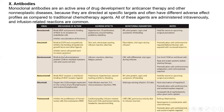Cetuximab also causes activation of apoptosis, inducing cell death in cancer cells. Its side effects include electrolyte wasting and infusion reactions. The last drug, trastuzumab, also targets the epidermal growth factor receptor — specifically the human epidermal growth factor receptor type 2 (HER2) — causing inhibition of tumor growth by blocking this receptor. Its side effects include cardiomyopathy, infusion-related fever and chills, pulmonary toxicity, and nausea/vomiting.